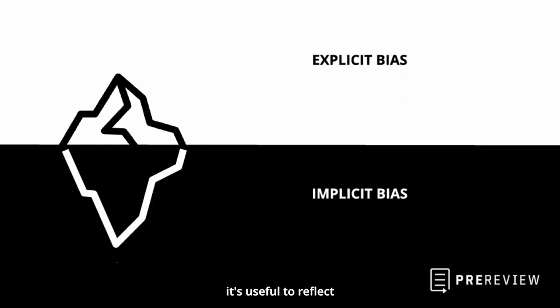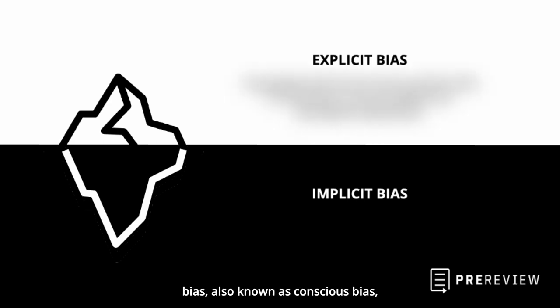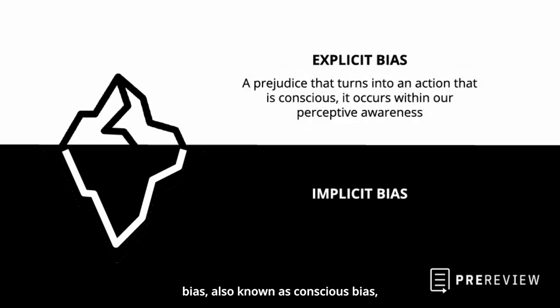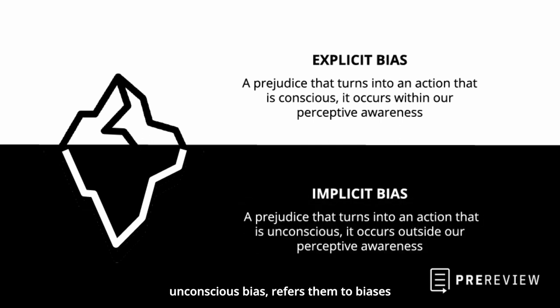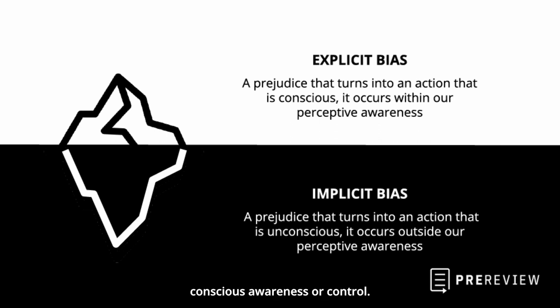First, we think it's useful to reflect on the difference between explicit and implicit bias. Explicit bias, also known as conscious bias, occurs when individuals are aware of their biases and intentionally act upon them. Implicit bias, also known as unconscious bias, refers to biases that exist without conscious awareness or control.